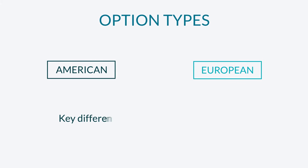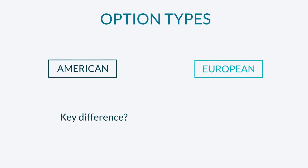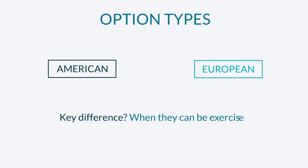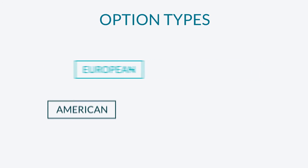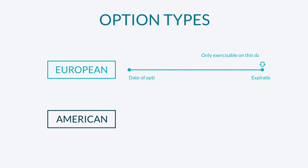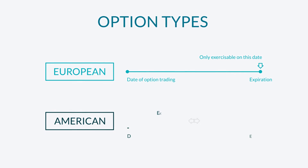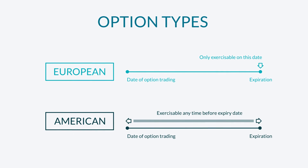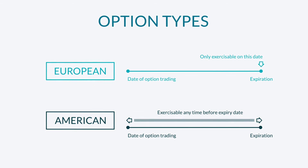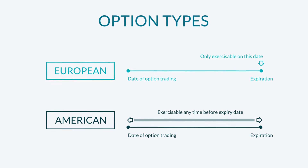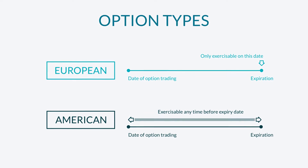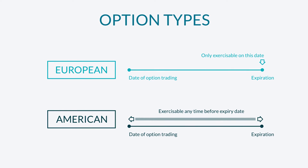The key difference between American and European options relates to when the options can be exercised. A European style option can only be exercised on the date of expiry. An American option, on the other hand, may be exercised at any time before the expiry date. LCG offers both styles of options trading.